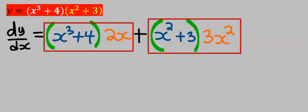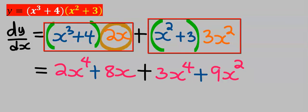Next, expand the bracket. That is, 2x multiply x to the power of 3, you are going to get 2x to the power of 4.